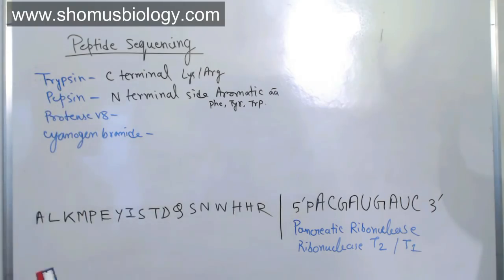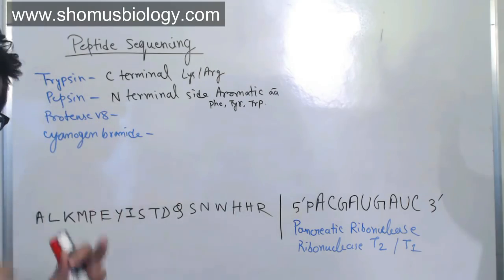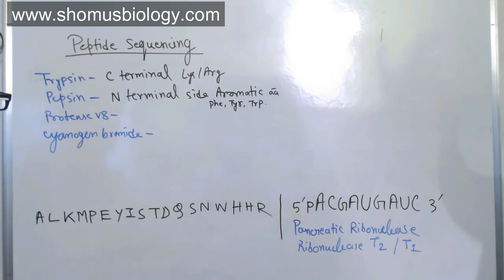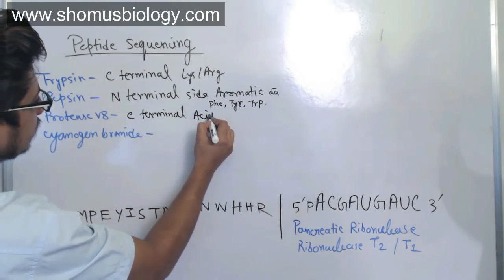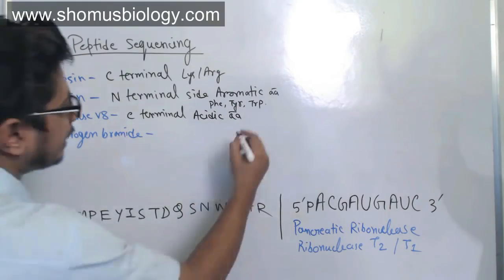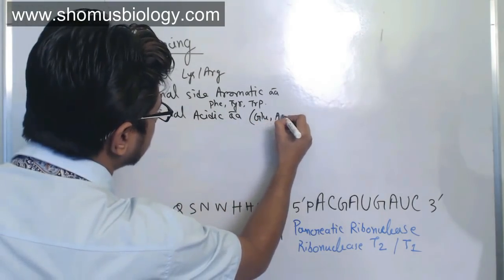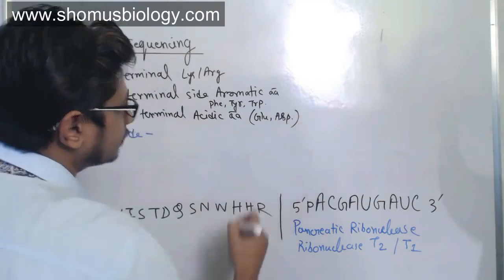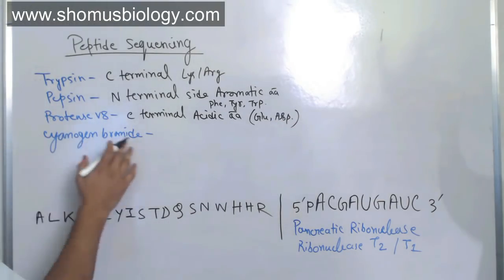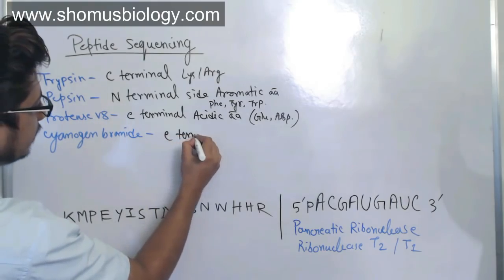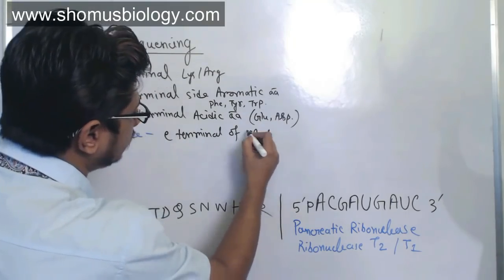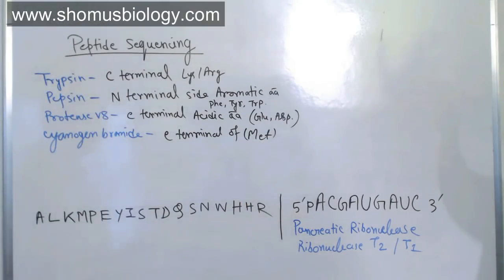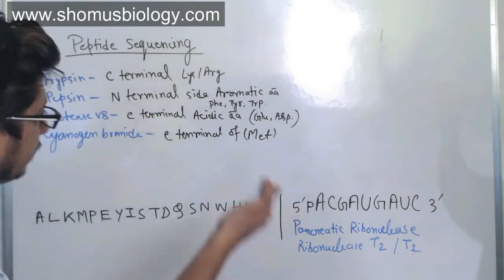Chymotrypsin also cleaves aromatic amino acids, but at the C-terminal side — so pepsin cleaves at the N-terminal side of aromatics while chymotrypsin cleaves at the C-terminal side. Protease V8 cleaves at the C-terminal side of acidic amino acids, meaning glutamic acid and aspartic acid. Cyanogen bromide cuts at the C-terminal side of methionine only.